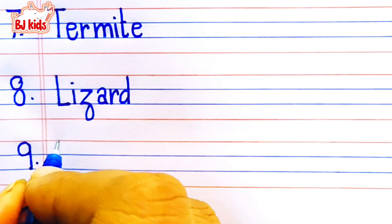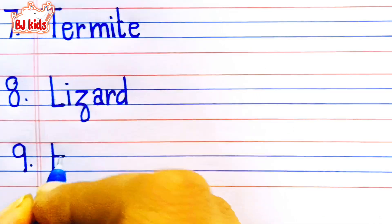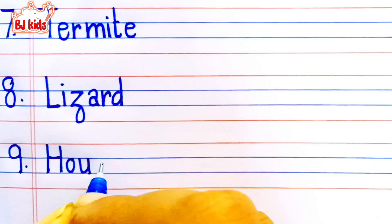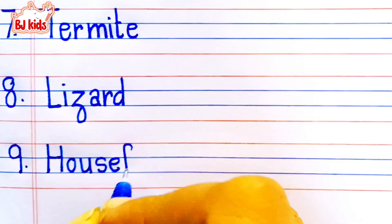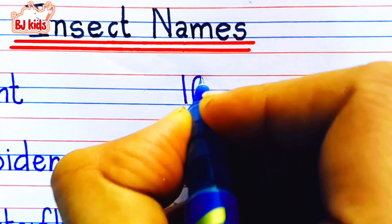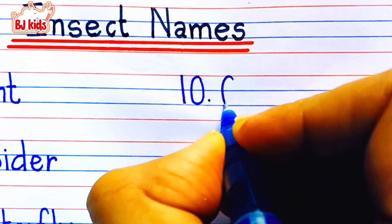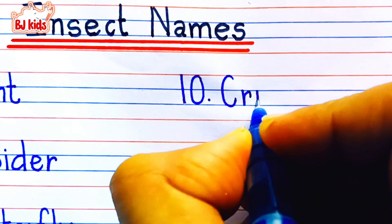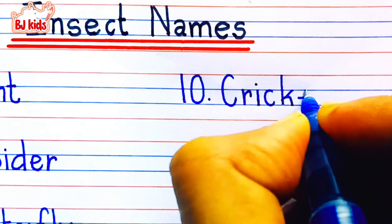Ninth one: house fly, H-O-U-S-E F-L-Y, house fly. Tenth one: cricket, C-R-I-C-K-E-T, cricket.